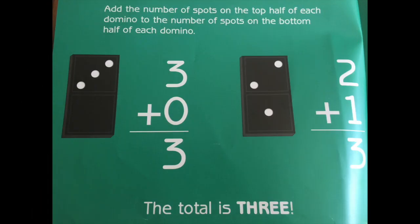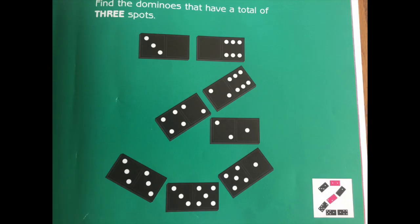Where are the dominoes that have a total of two spots? Add the number of spots on the top half of each domino to the number of spots on the bottom half of each domino. Three plus zero equals three. Two plus one is three. The total is three. Find the dominoes that have a total of three spots.